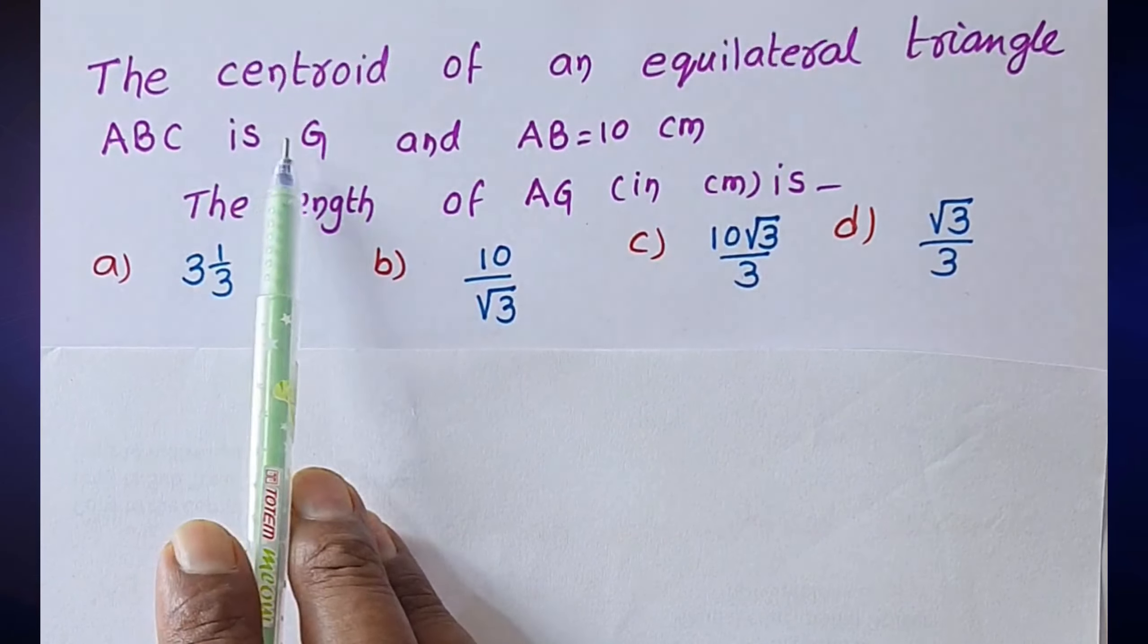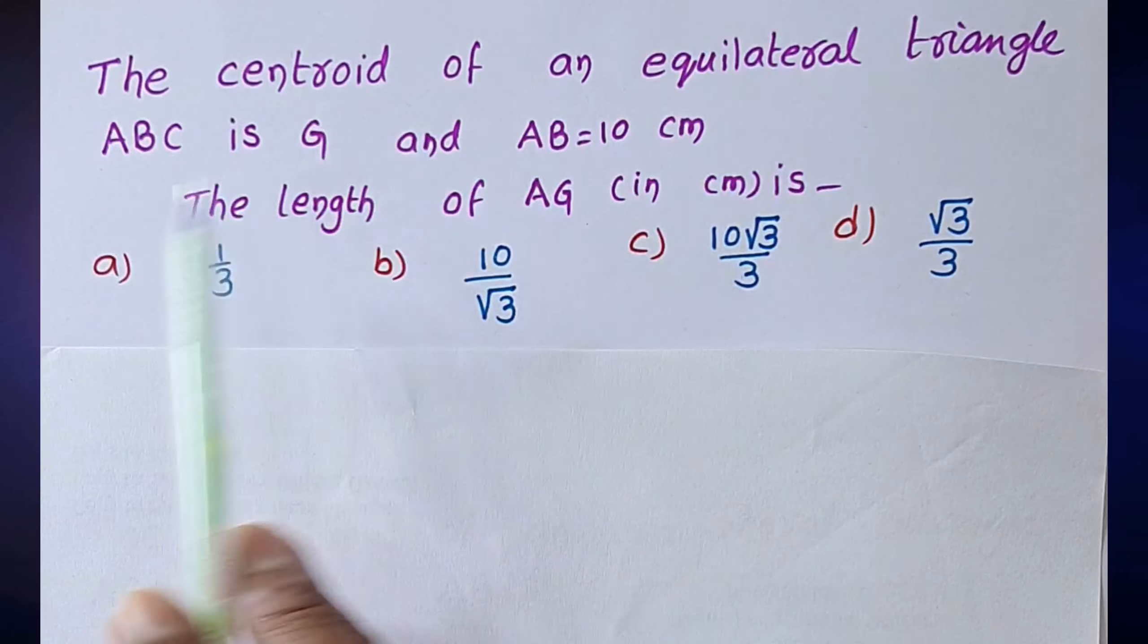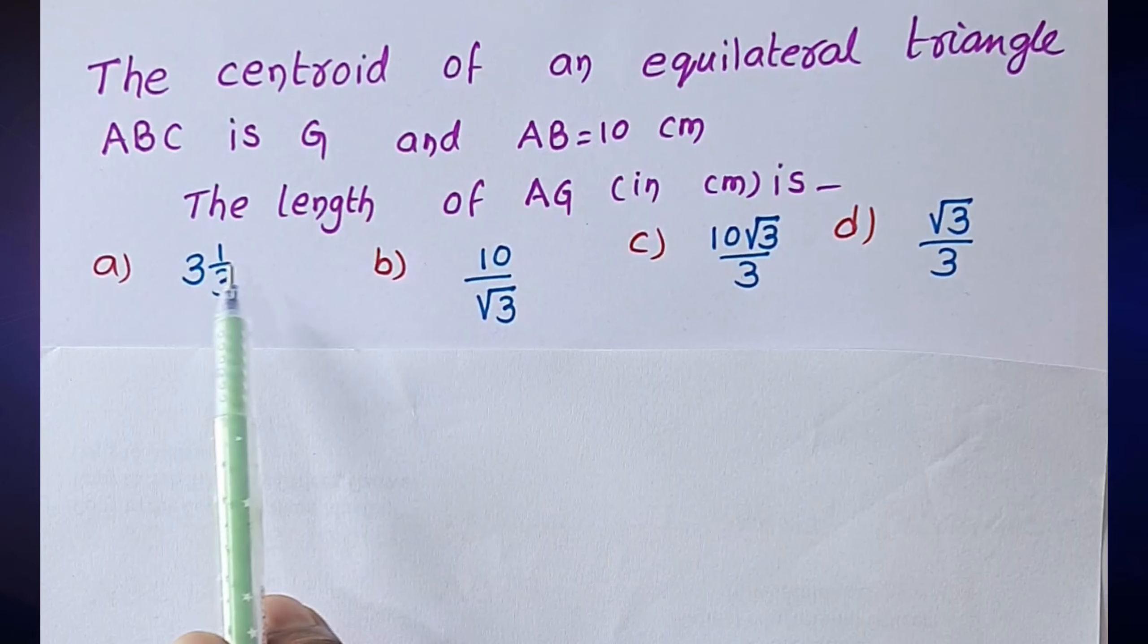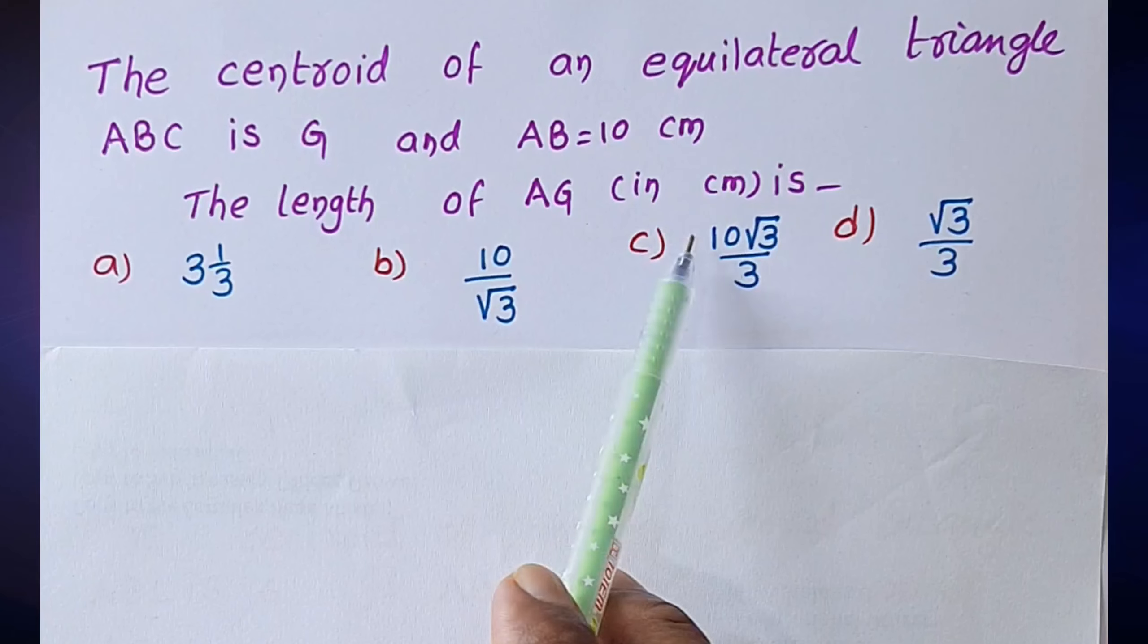Observe the question. The centroid of an equilateral triangle ABC is G and AB equal to 10 centimeters. The length of AG in centimeters.